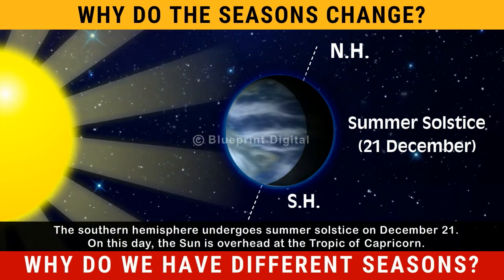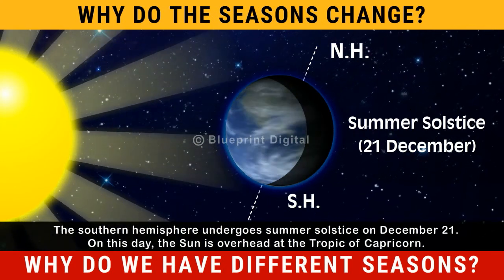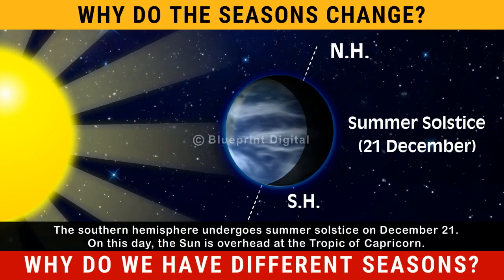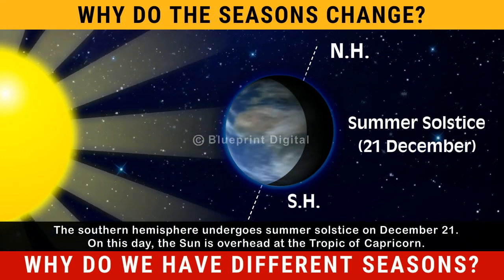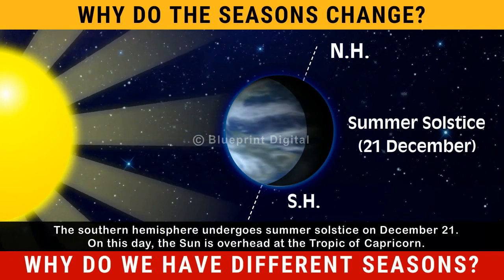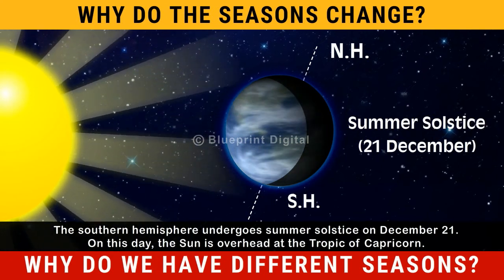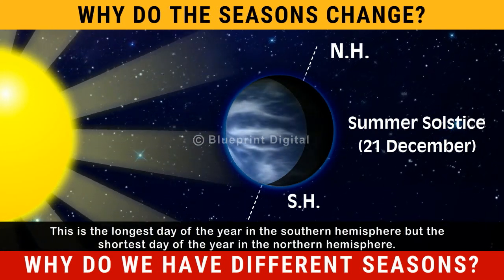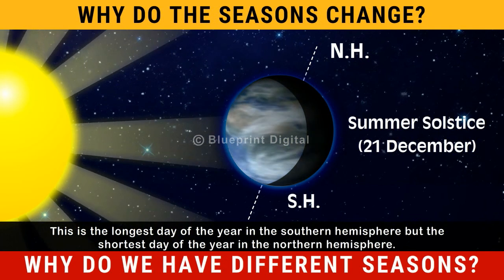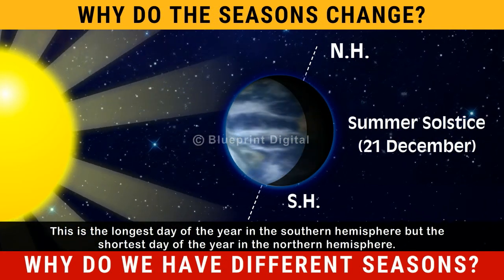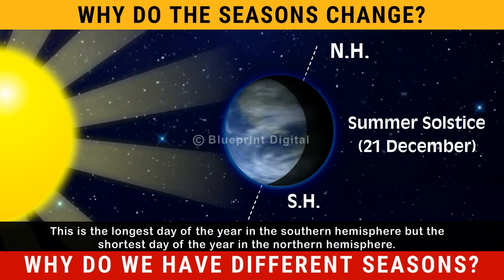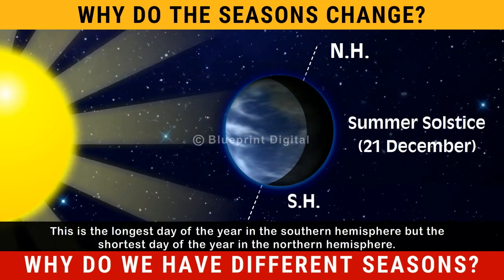The Southern Hemisphere undergoes Summer solstice on December 21. On this day, the Sun is overhead at the Tropic of Capricorn. This is the longest day of the year in the Southern Hemisphere, but the shortest day of the year in the Northern Hemisphere.